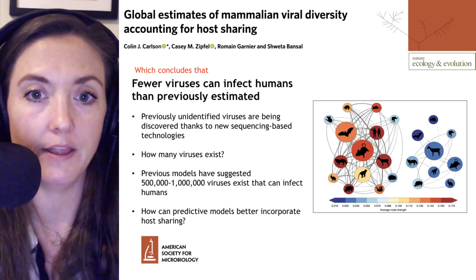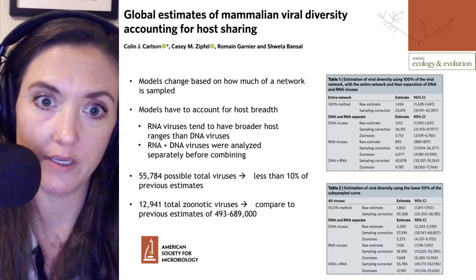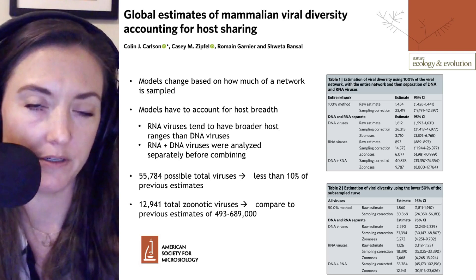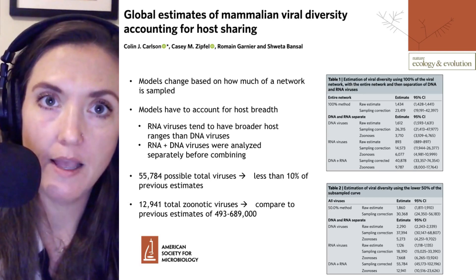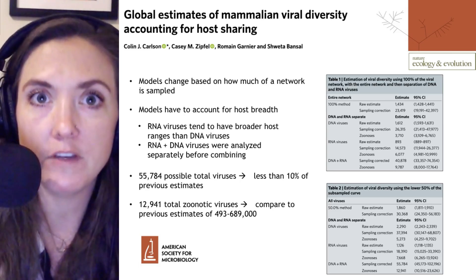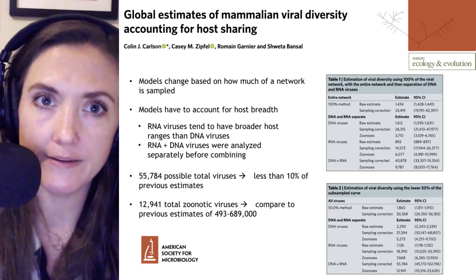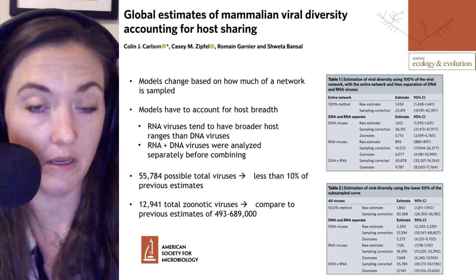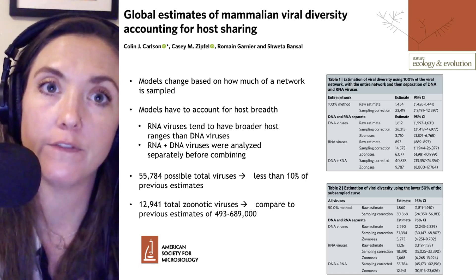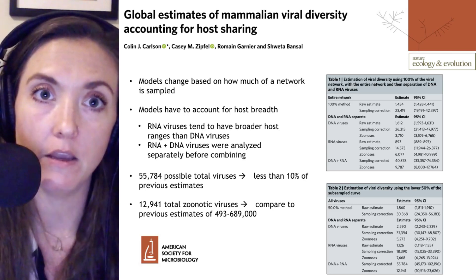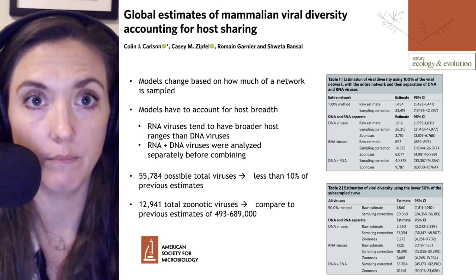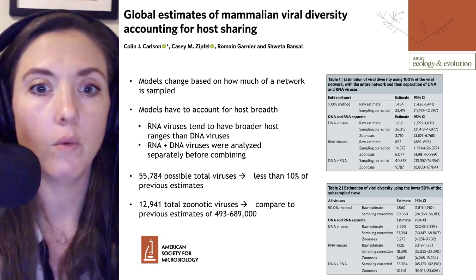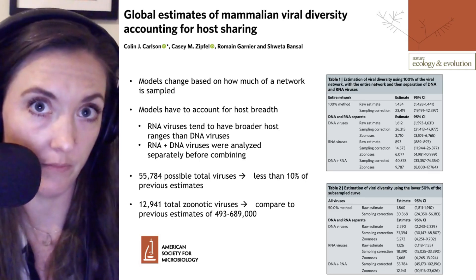They also looked at how much of a network is being sampled. They found that the network sampling size can affect the viral diversity predictions, such that looking at only 10% of mammal species gives a different prediction than looking at 50% or 100% of mammal species, and it doesn't correlate linearly. They looked at different mathematical models to determine the best way to make those predictions, and then had to analyze different viral types independently, since RNA and DNA viruses have different host species breadth. RNA viruses tend to infect more species, whereas DNA viruses tend to be more restricted in the number of host species they can infect.